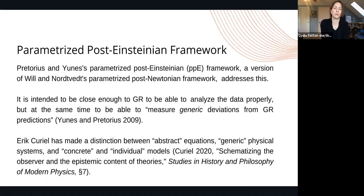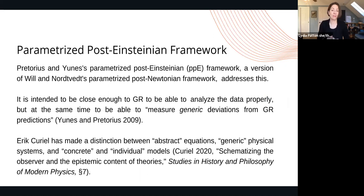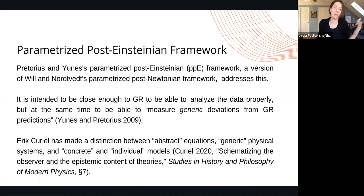They propose what's called the parametrized post-Einsteinian framework, which is a version of the parametrized post-Newtonian approximation, to address this issue. The PPE framework is intended to be close enough to general relativity to analyze the data properly, but also to measure what they call generic deviations from the predictions of GR. I want to note that in a recent paper, Eric Curiel has made a distinction between abstract equations, generic physical systems, and concrete individual models, which I see as closely tracking the idea of generic deviations that Yunus and Pretorius point out here.